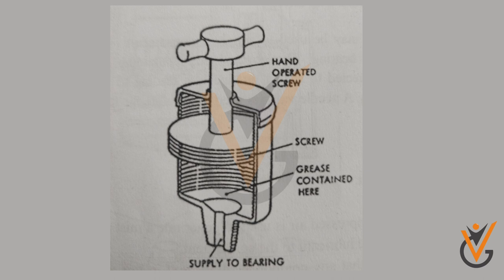Screw-operated: grease is forced through the feed duct or pipe by the operation of a screw cap. This type is suitable for thicker grades of grease and for longer feed ducts or pipes. The disadvantage with this type of grease cup is that the feed is intermittent and controlled by manual adjustment of the screw.